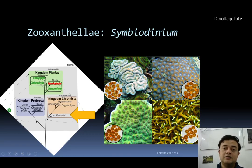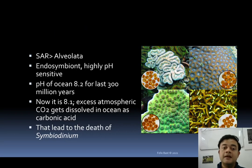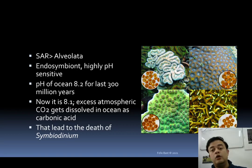Symbiodinium serves as the photosynthetic partner of the cnidarians in coral reefs. When Symbiodinium dies, the coral reef gets bleached — an irreversible process. This is a repercussion of climate change; ocean acidification is a major culprit devastating coral reefs worldwide. Alveolata belongs to the SAR supergroup, as current phylogenetic evidence indicates.